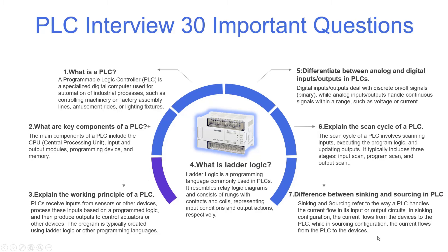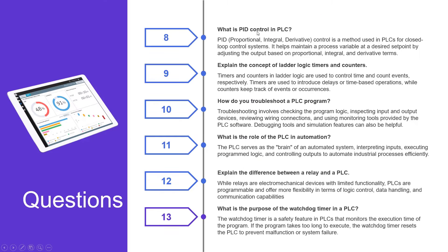What is PID control in a PLC? PID — proportional, integral, derivative — control is a method used in PLCs for closed-loop control systems. It helps maintain a process variable at a desired set point by adjusting the output based on proportional, integral, and derivative terms.